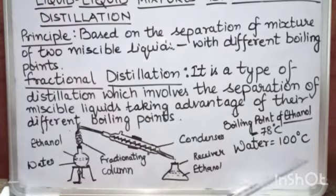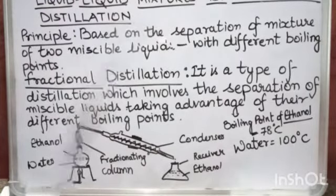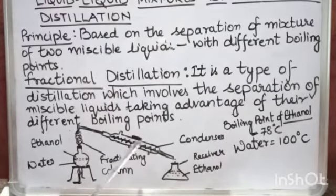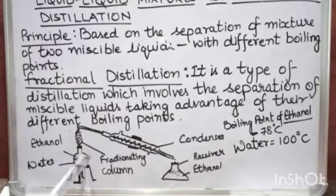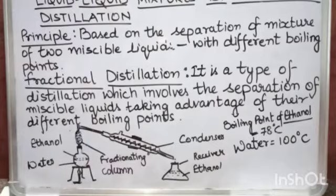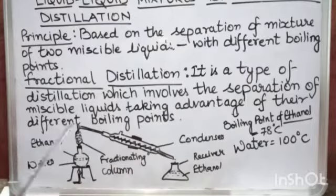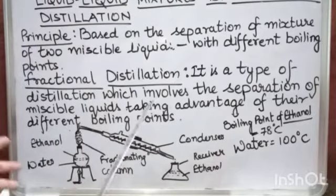Water has the higher boiling point, so it will boil later — after ethanol starts boiling. Water vapor will not reach the condenser; it will condense in the fractionating column only, turn into liquid, and be collected back in the distillation flask. This is how ethanol and water are separated from the homogeneous mixture.